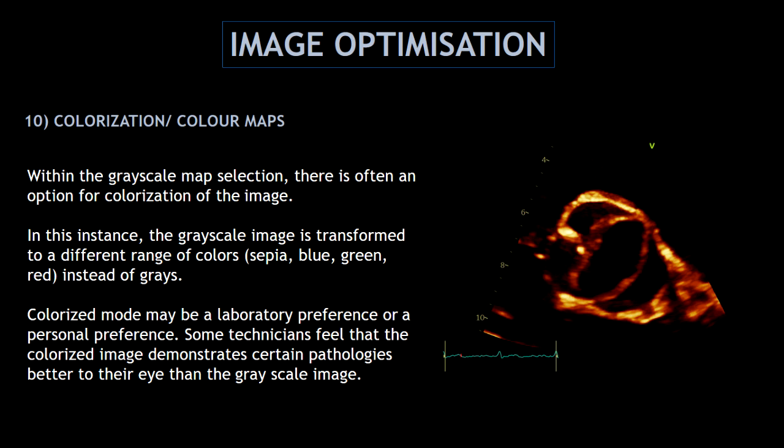If you follow me on Instagram, you must know already that this is one of my favorite image optimization tools, and it's called colorization or color maps. This is basically an option for colorization of the image — when you use this feature, the image is transformed to a different range of colors, like sepia, blue, green, or red instead of grays. Colorization is really a personal preference, but some technicians feel that the colorized image demonstrates certain pathologies better than the grayscale image. You can see here how the bicuspid aortic valve looks well-defined and brighter in a yellowish color.